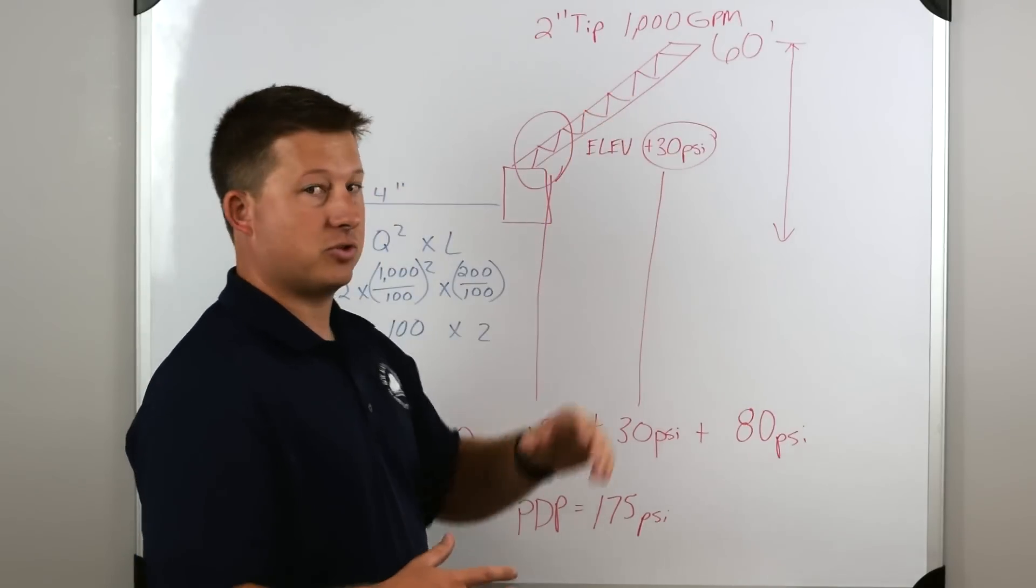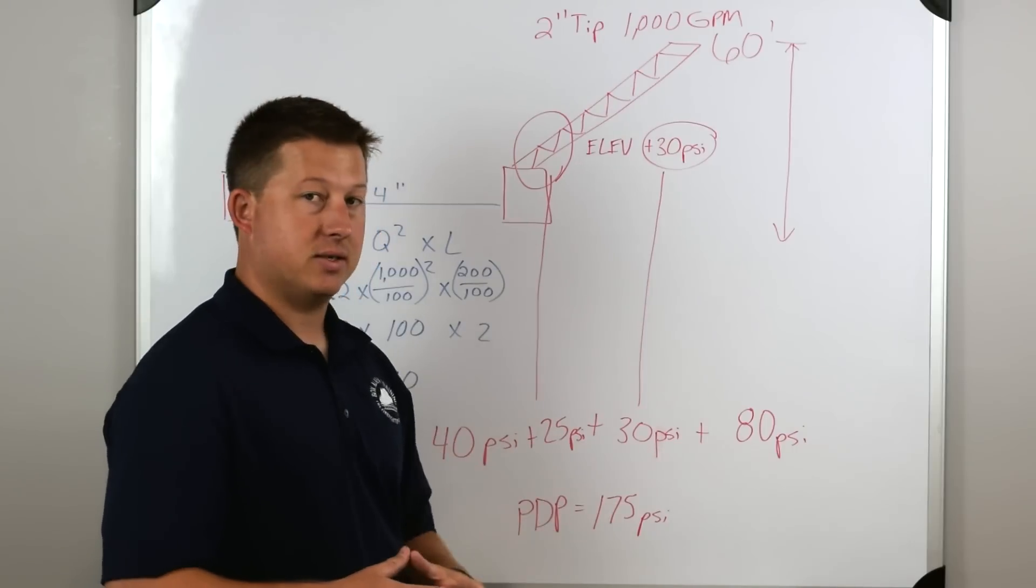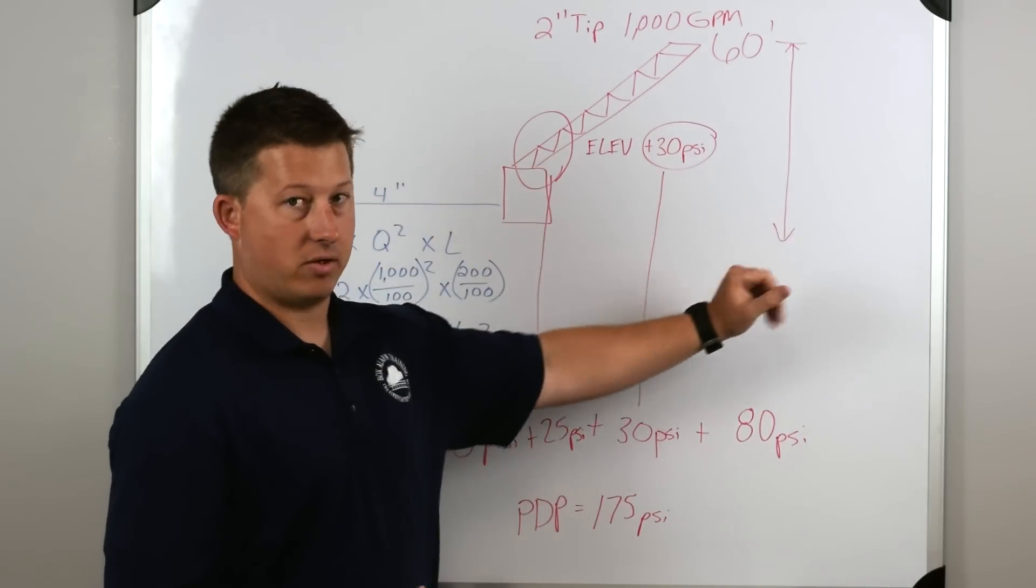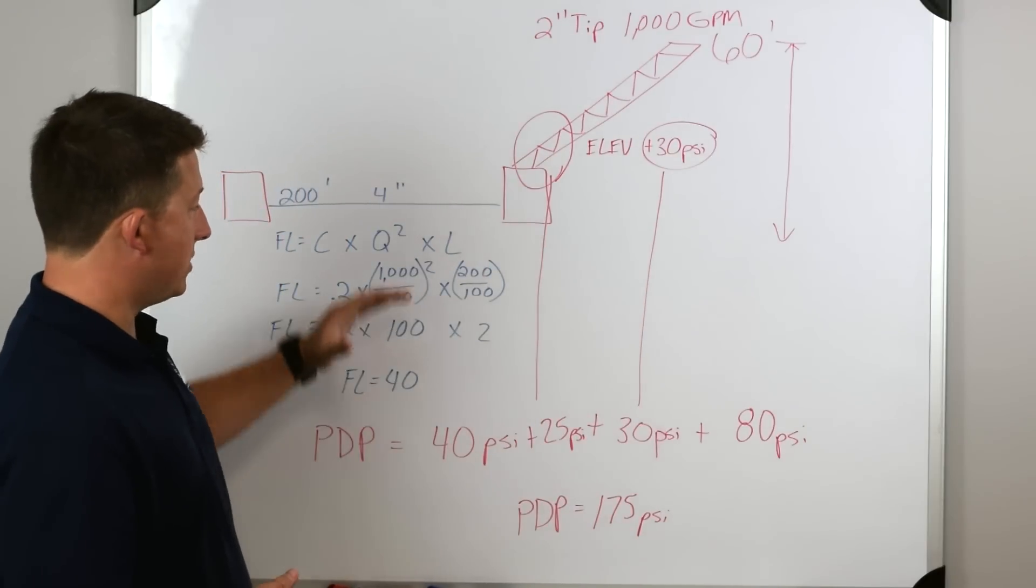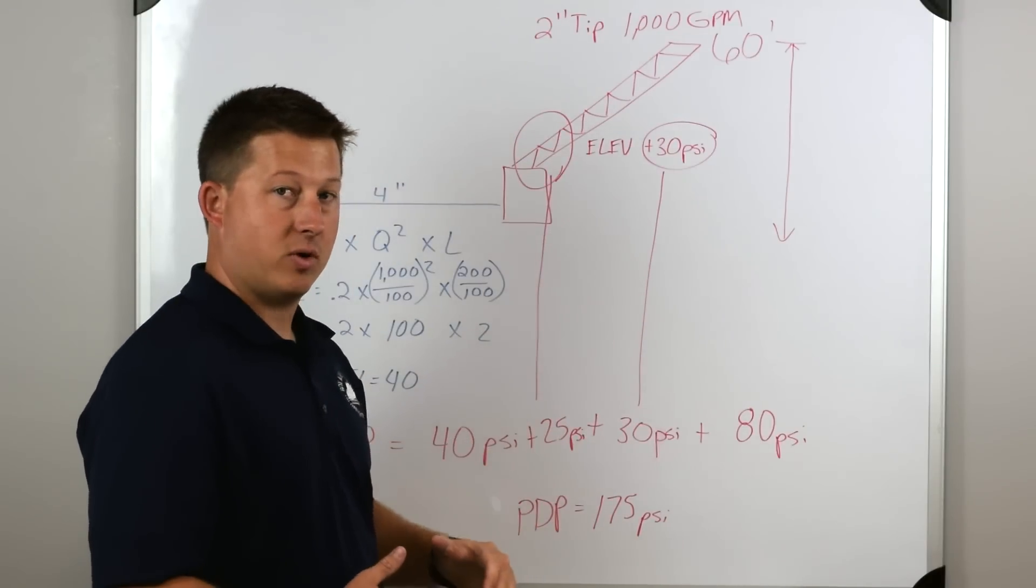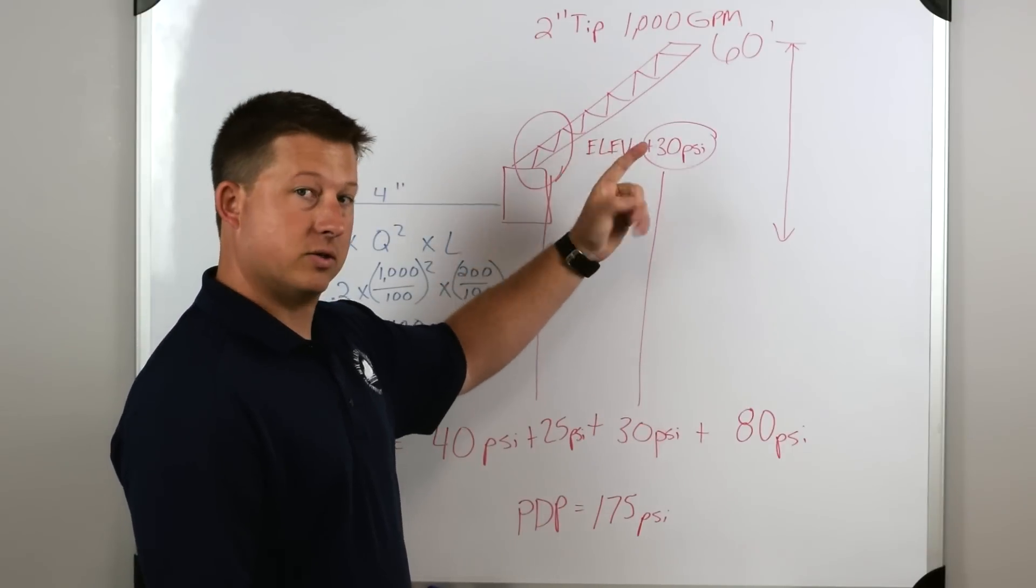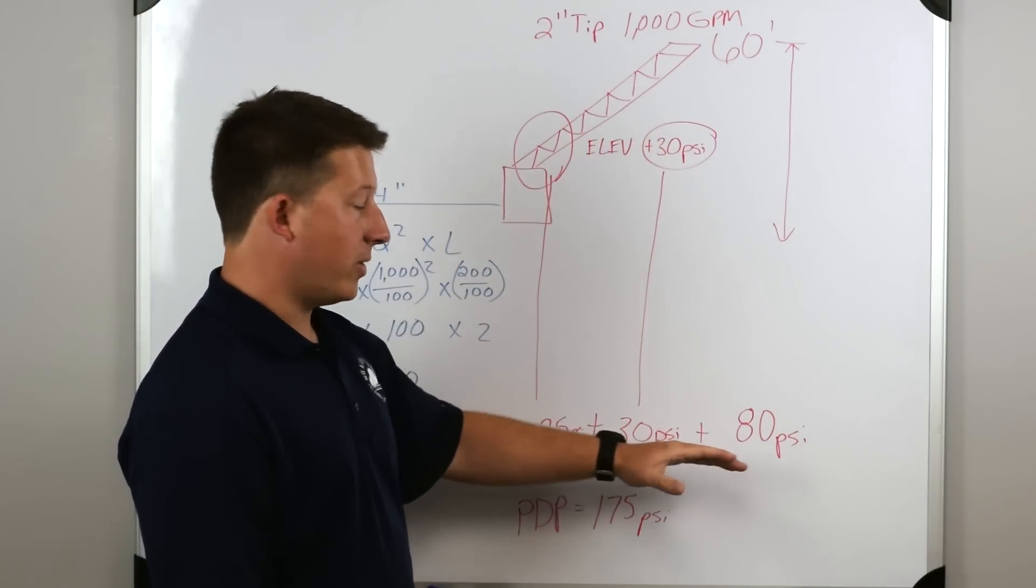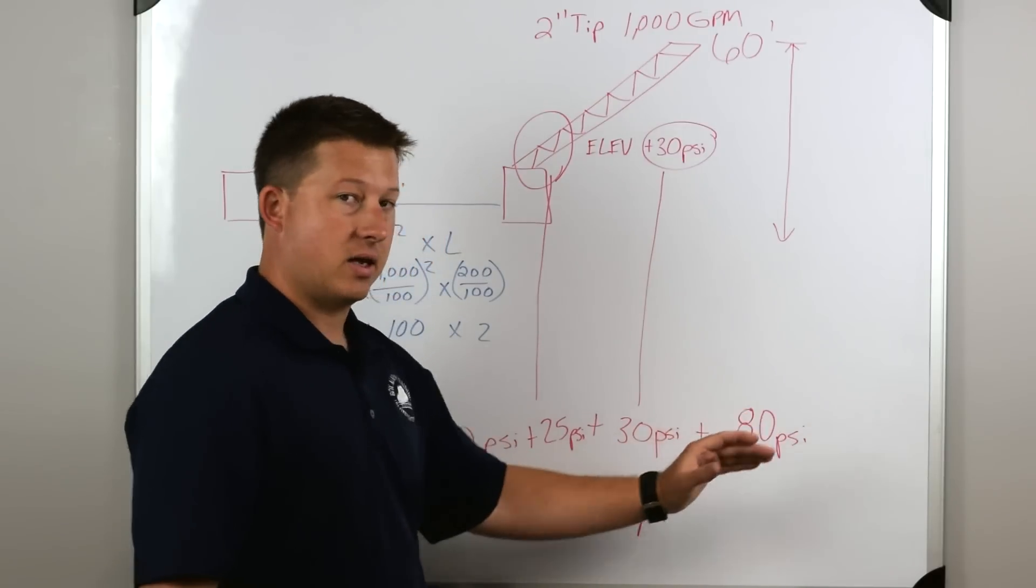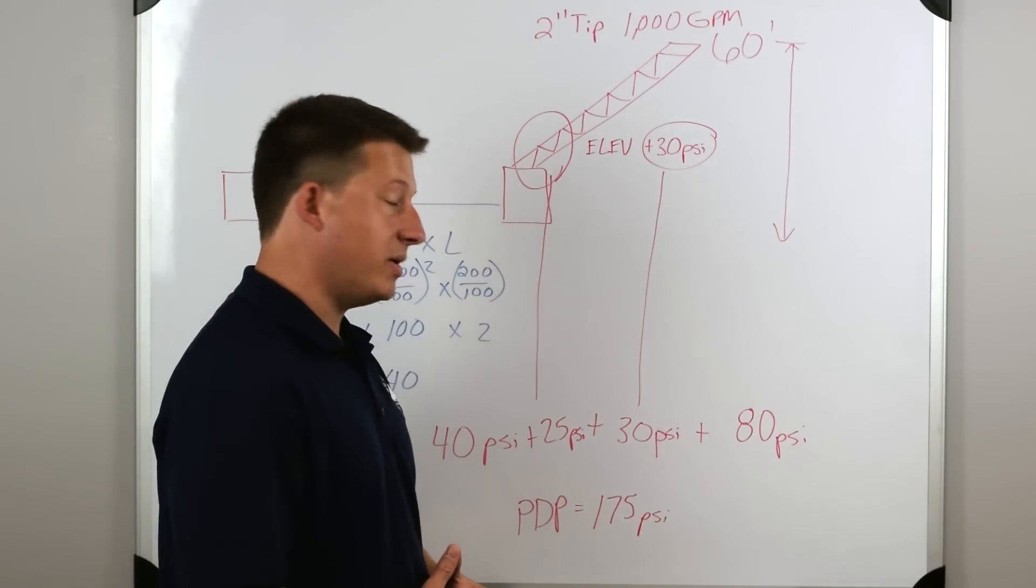The last thing that we need to know is the nozzle pressure. It's a 2 inch master stream nozzle flowing 1,000 gallons per minute, so that's going to be 80 PSI. So we add all of those things together from left to right. We add the 40 PSI of friction loss, we add the 25 PSI for the master stream or the aerial waterway, we add 30 PSI because the aerial is 60 feet up in the air, and then we add 80 PSI for the nozzle pressure. All of those things added together give us a pump discharge pressure of 175 PSI.